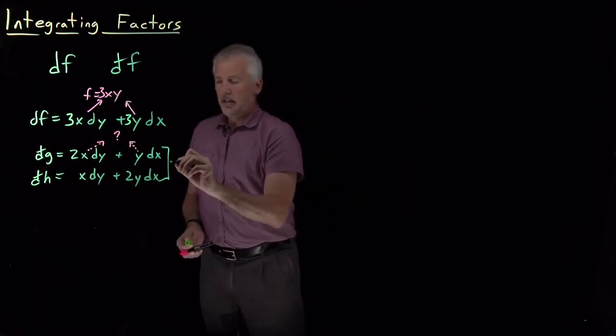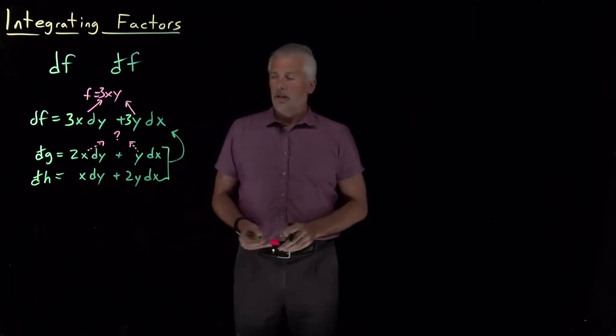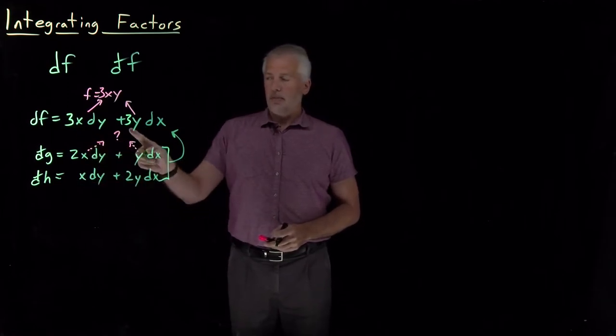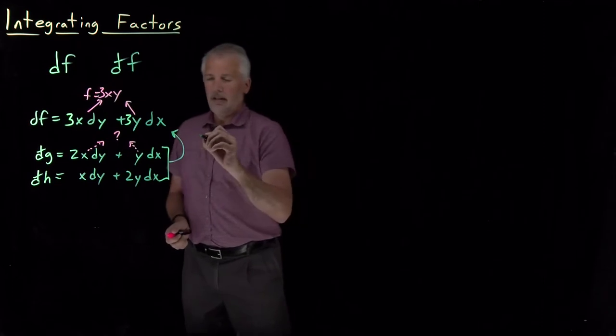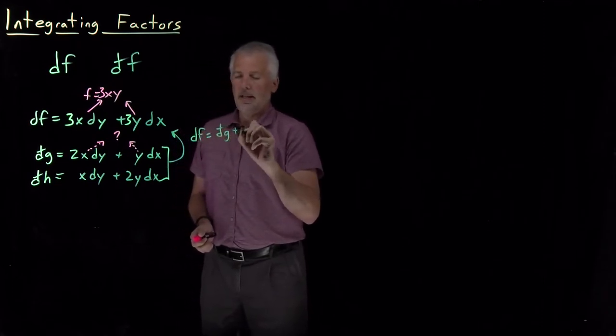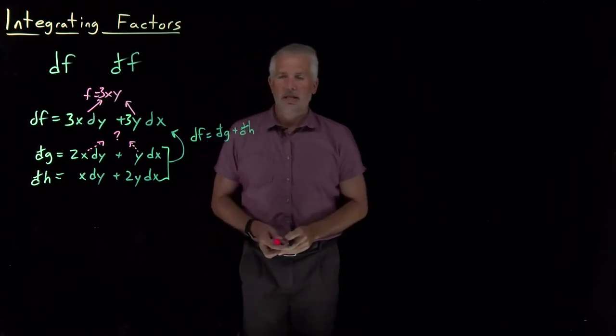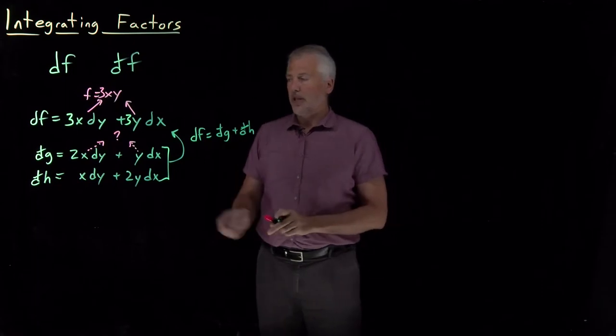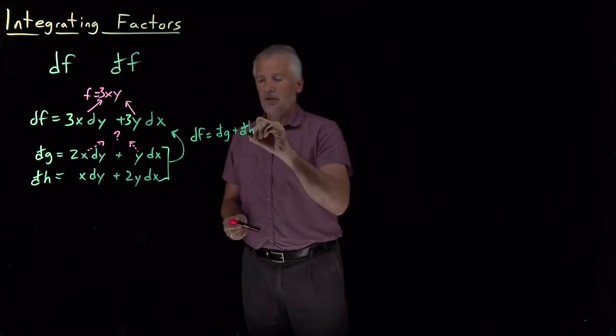But notice that if I add those two together, 2x and x give me 3x, 2y and y give me 3y. So if I combine those two inexact differentials, the ones I've called dg and dh, those two inexact differentials happen to sum to the same as this exact differential df.